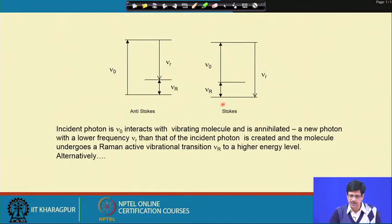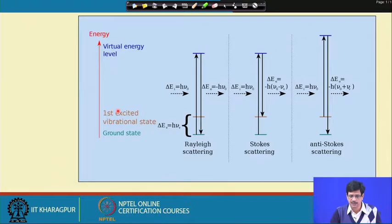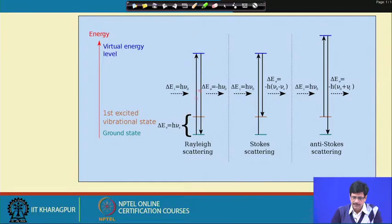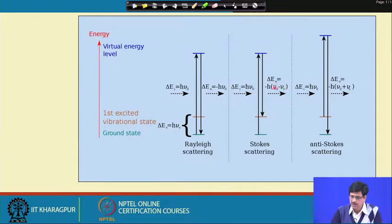Alternatively, when there is a gain, the electromagnetic wave gains energy and is emitted with a higher frequency. The first case we call Stokes scattering, and the reverse case is anti-Stokes scattering, as shown by the energy level diagram. For Rayleigh scattering, delta-E of incident equals h*nu-0 and the emitted energy change is zero. For Stokes, the emitted energy change is minus h*(nu-0 minus nu-v), and for anti-Stokes it is nu-0 plus nu-v.